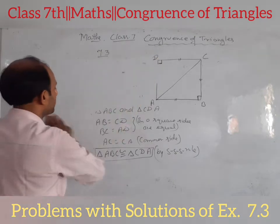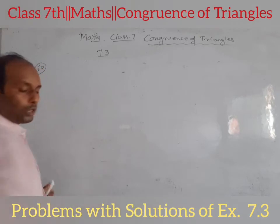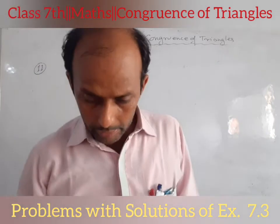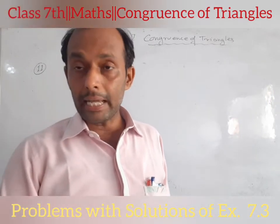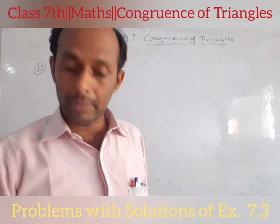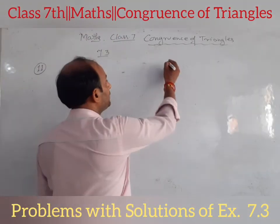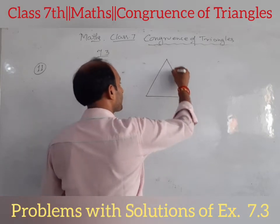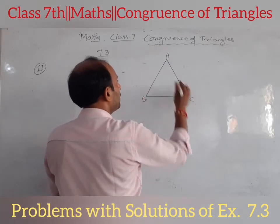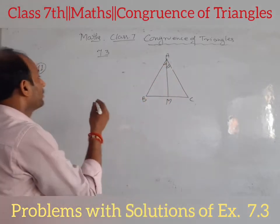The next question is question 11. In triangle ABC, ABC is an isosceles triangle with AB equal to AC. AM is the bisector of angle BAC. Prove that triangle ABM is congruent to triangle ACM. This is the given setup. We draw triangle ABC with AM as the bisector.